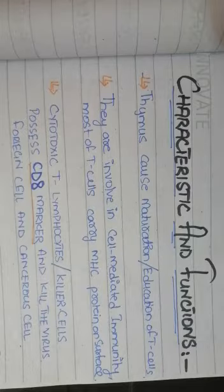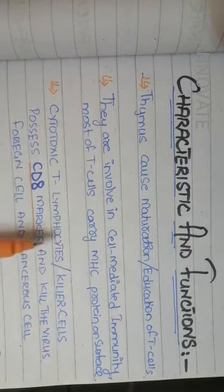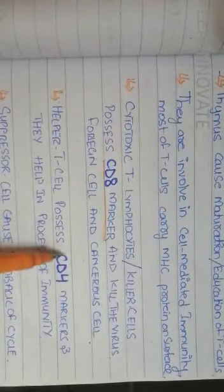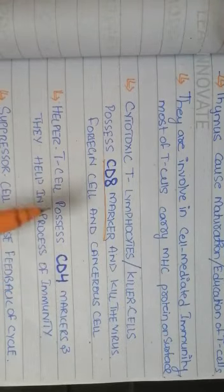The CD8 marker is an important carrier for certain immunity-related conditions. It is present on the cytotoxic T cell, which kills virus-infected cells, foreign cells, and cancerous cells — that is why they are called killer T cells. The helper T cells possess the CD4 marker on their surface and help the process of immunity, including assisting the cytotoxic T cell and the suppressor T cell.